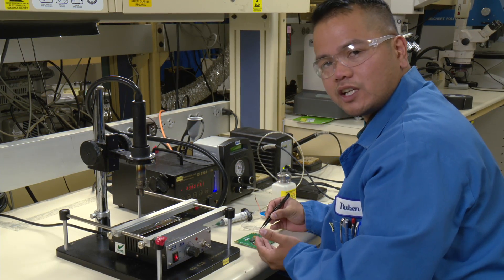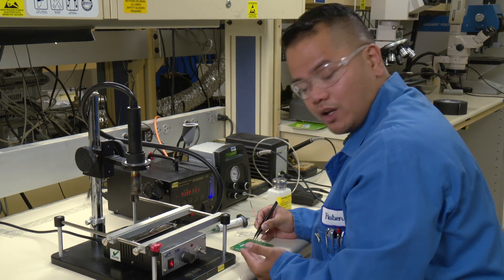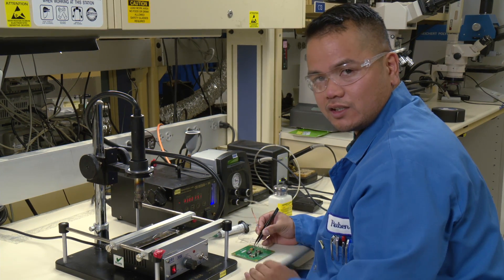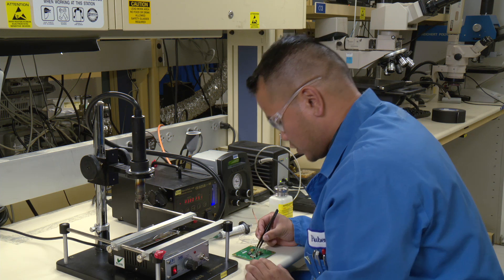At this point, don't worry about the liquid solder overflowing all over the place. The EVM board has a solder mask protectant so that it's not going to go to any other lead for it to short.